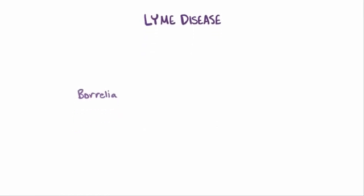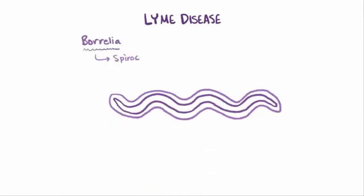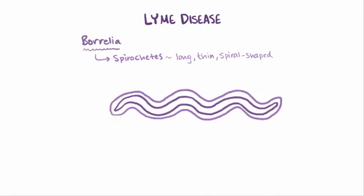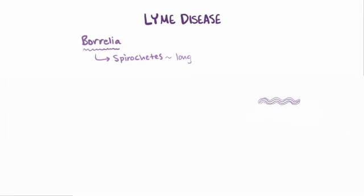These Borrelia bacteria are all spirochetes, which means that unlike other bacteria, they're long, thin, and spiral shaped, and they spin or twist to move around.